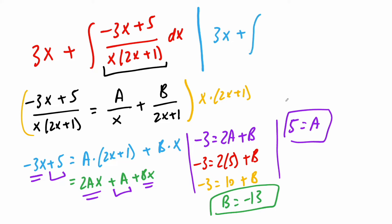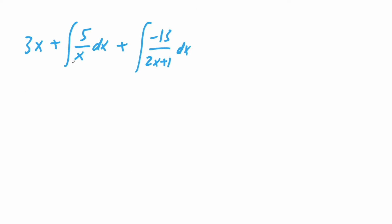We're going to get the integral. A is 5, so 5 divided by x dx plus b is negative 13. Negative 13 divided by 2x plus 1 dx. Because again, this piece right here, we have an integral of it. Now this piece will be very easy to solve.